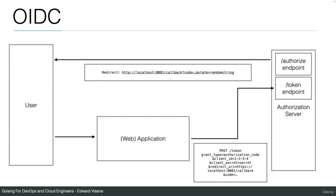The authorization server redirects to the /login page. After successful login, the authorization server sends a redirect back to the application server at the callback URL. The callback URL is whitelisted in the authorization server configuration so users can't be redirected anywhere arbitrary. The code and the state random string are included in this redirect.